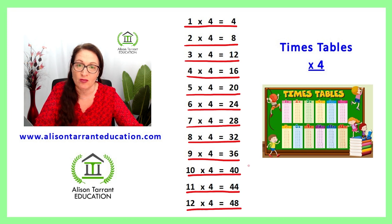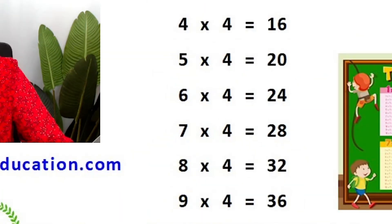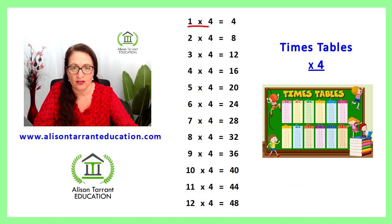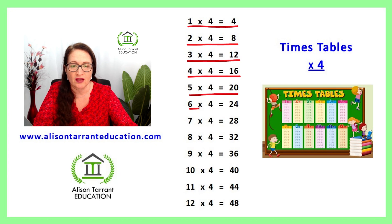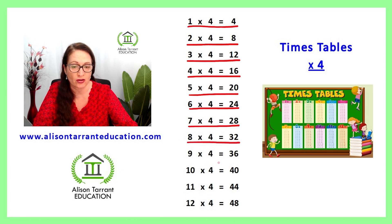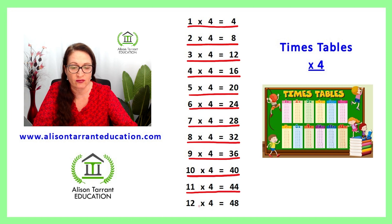Well done. Let's practice that again. 1 times 4 is 4, 2 times 4 is 8, 3 times 4 is 12, 4 times 4 is 16, 5 times 4 is 20, 6 times 4 is 24, 7 times 4 is 28, 8 times 4 is 32, 9 times 4 is 36, 10 times 4 is 40, 11 times 4 is 44, 12 times 4 is 48.